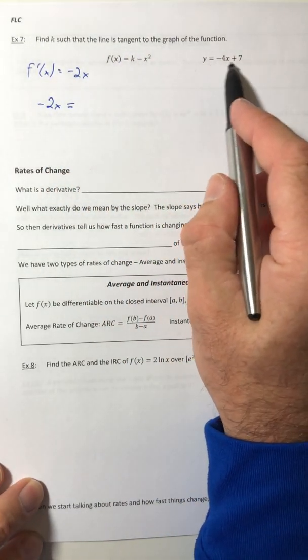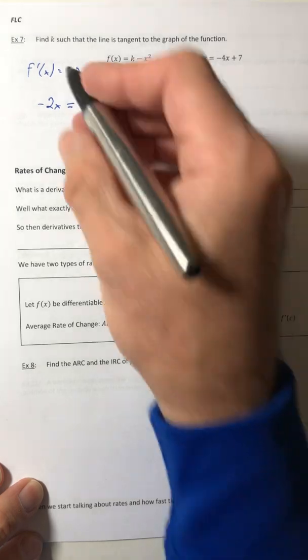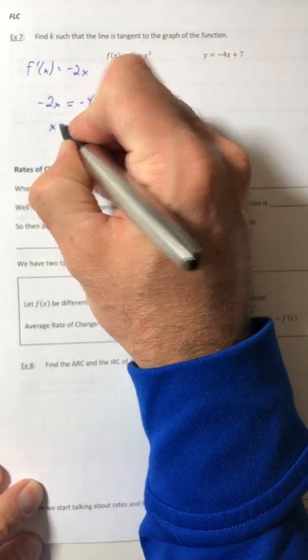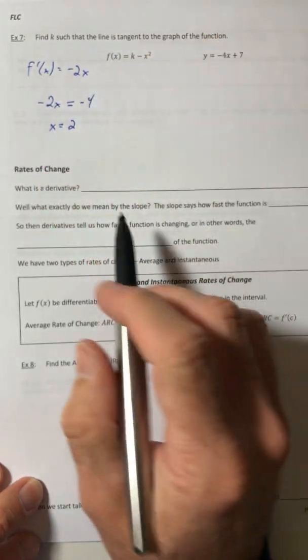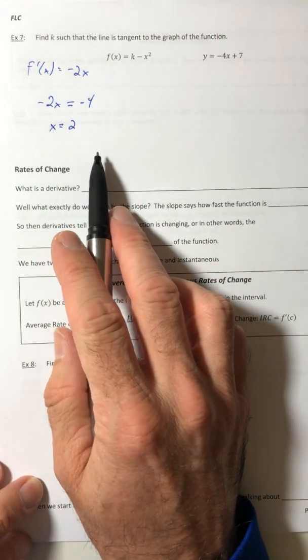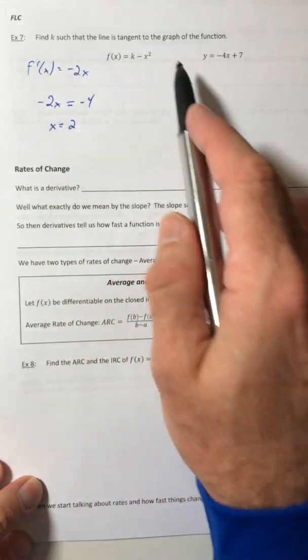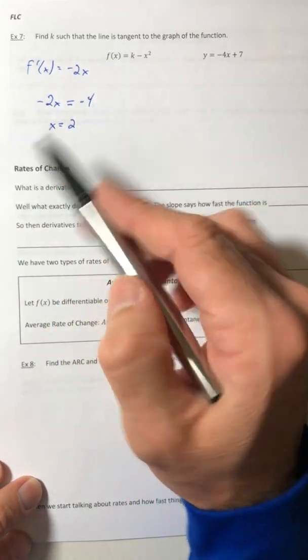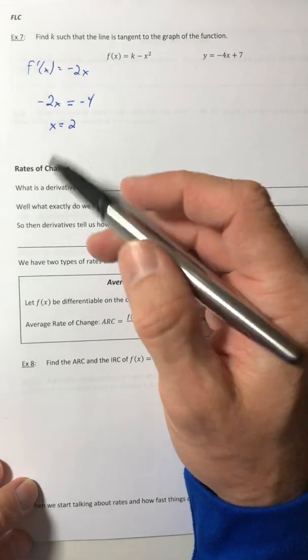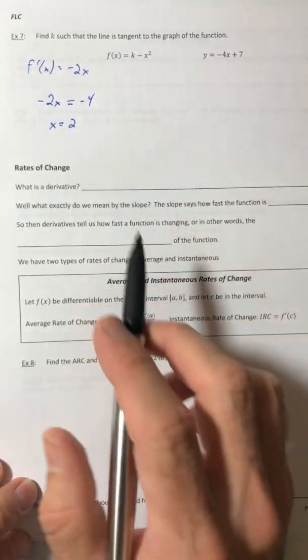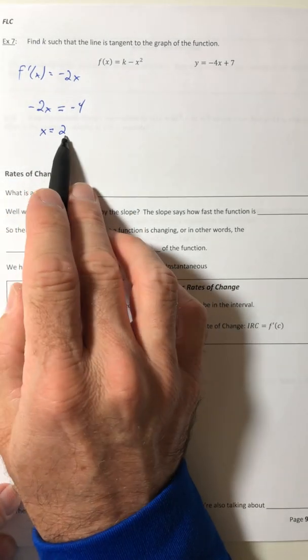Well, here's the tangent line. What's the slope of the tangent line? Negative 4. So we can solve for x and x would equal 2. So that's kind of weird because it wanted to know what k was. Well, in order to get k, we've got to figure out what point are these two things, or is this going to be tangent to this function?